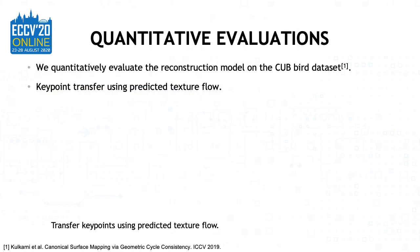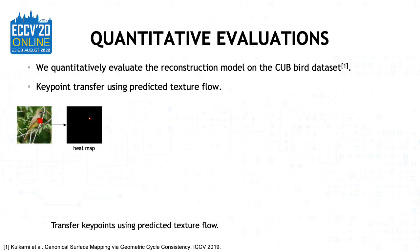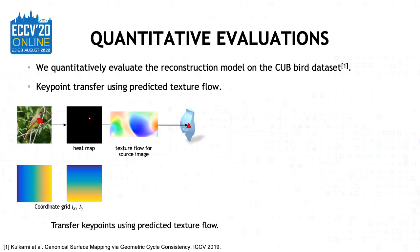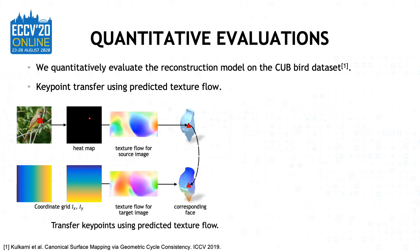We show quantitative evaluation on the CUB bird dataset. We evaluate both the learned texture flow and the camera using the keypoint transfer task. Given the ground truth keypoint in the source image, we first convert each keypoint to a heatmap, and use the predicted texture flow to map the keypoint to a face on the template. We then use the predicted texture flow for the target image to sample a standard grid, which maps all points on the target image to faces on the template. So the keypoint in the source image is transferred to the location in the target image that has been mapped to the same face on the template.